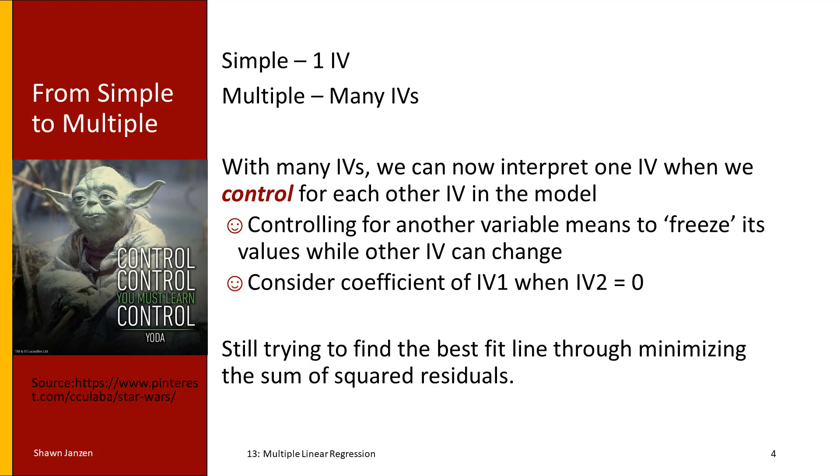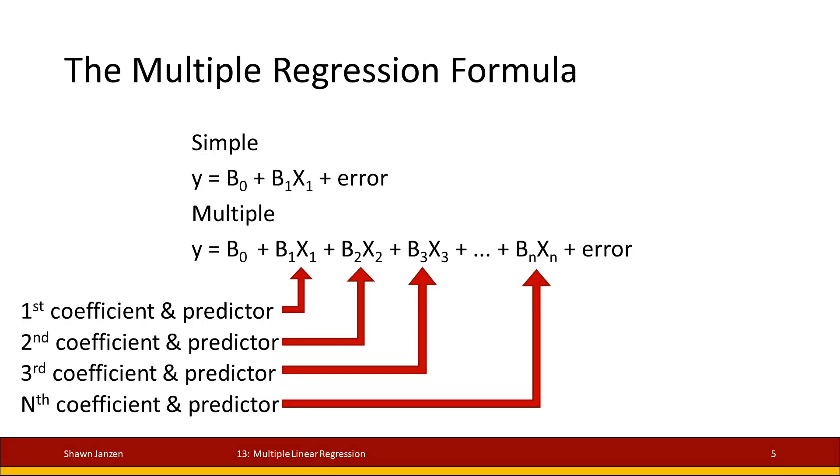And so you consider that we are controlling for the extra variation, we are controlling for different values that we could have in the particular model with each additional independent variable that we're putting in here. Now keeping that in mind, we're still trying to find the best line of fit to minimizing the residual sums of squares. That's the strategy and approach we were using in OLS for simple linear regression—OLS being ordinary least squares—and we're going to continue this method into the multiple linear regression as well.